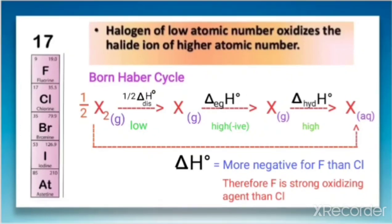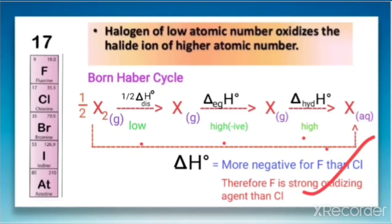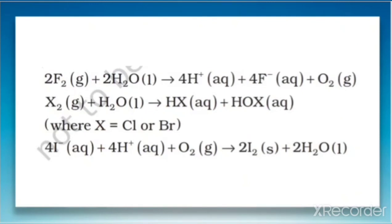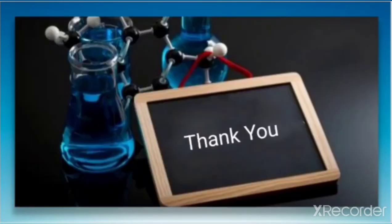From the Born-Haber cycle we can conclude that the overall tendency for oxidizing power depends upon the net effect of the three steps, and therefore fluorine is a stronger oxidizing agent. The relative oxidizing power of fluorine can be further illustrated by its reaction with water. So fluorine is the stronger oxidizing agent and iodine is the weakest oxidizing agent among the halogens.